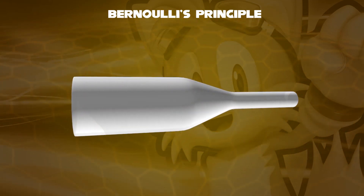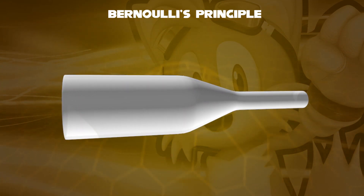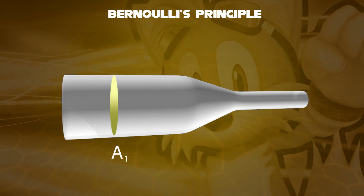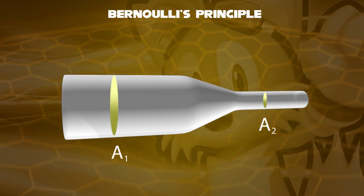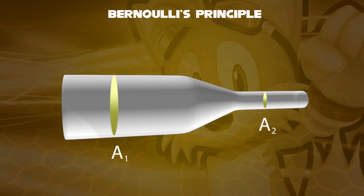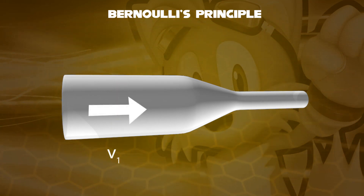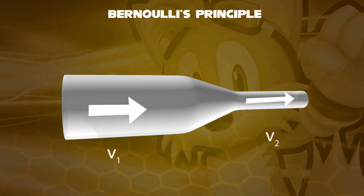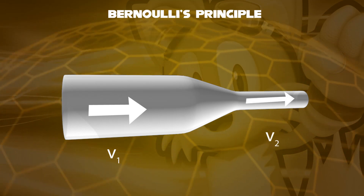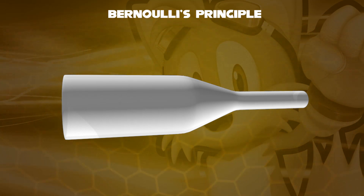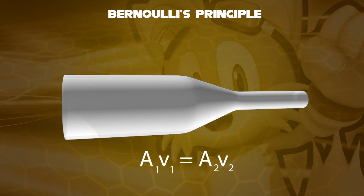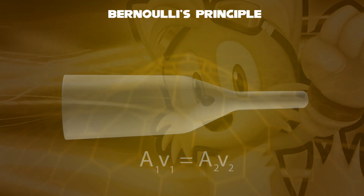First, with no height change, there are two sizes of cross-section areas, A1 and A2, and we depend on two velocities of water flow, V1 and V2. Its equation can be written as A1V1 equals A2V2.